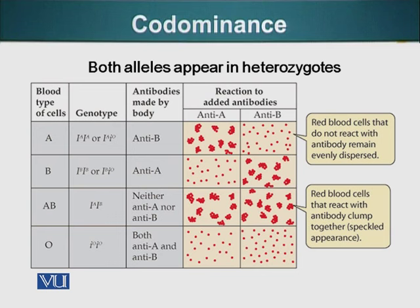Blood groups were discovered by Karl Landsteiner in the early 1900s. Before that, attempts to transfuse blood from one patient to another were not always successful. As we know today, if we transfuse blood that is not matching, it can have serious consequences for the patient.